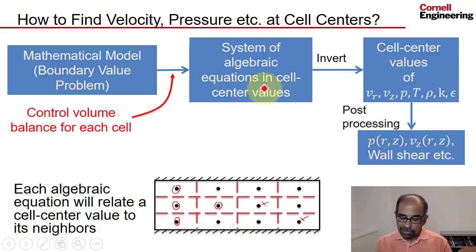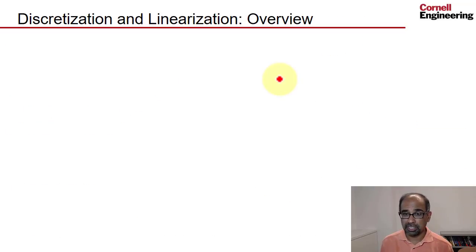And an initial wrinkle is that the algebraic equations that you get, the system of algebraic equations, is nonlinear because our partial differential equations are nonlinear. So you have to bring in linearization too. So there's discretization and also linearization.